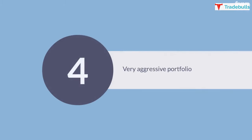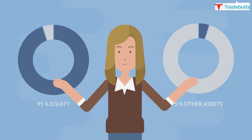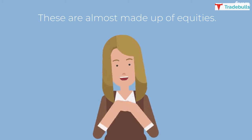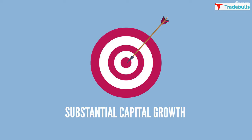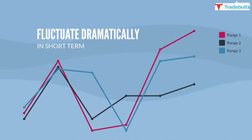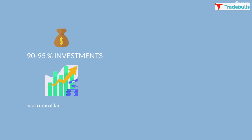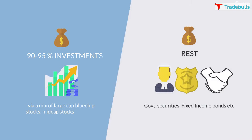For a Very Aggressive Portfolio, it consists of 95% equity and 5% other assets — these are almost entirely made up of equities. Your aim here is to achieve substantial capital growth over a lengthy period of time. As these portfolios are high risk, their value will fluctuate dramatically in the short term. Composition: 90–95% investments via a mix of large cap blue chip stocks and mid cap stocks, while the rest remains in government securities and fixed income bonds.